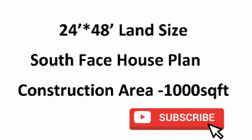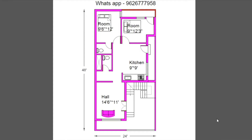Hi friends, welcome to my YouTube channel. Let's talk about a 24x48 south-facing house plan. The total construction cost is 17 lakhs. We will talk about the land size — 24x48 south-facing land.